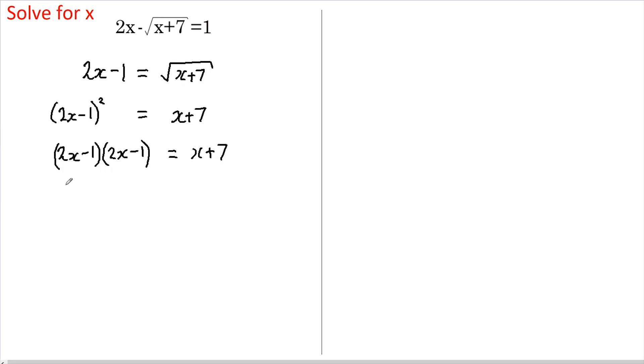2x times 2x is 4x squared. 2x times minus 1 and minus 1 times 2x gives us minus 4x. And minus 1 times minus 1 gives us plus 1.